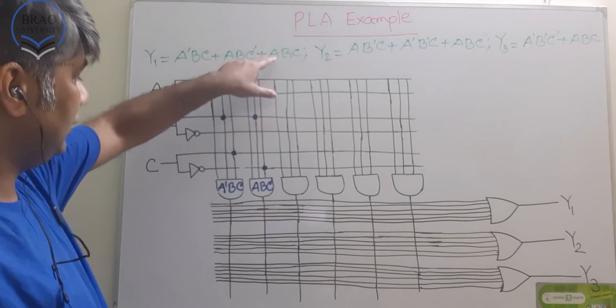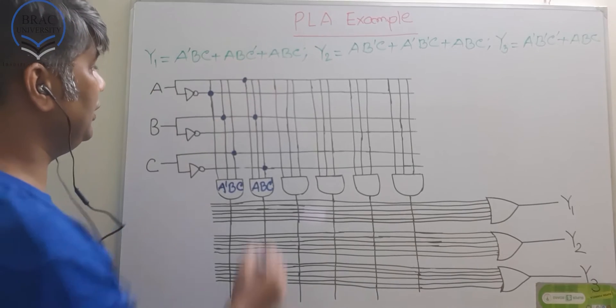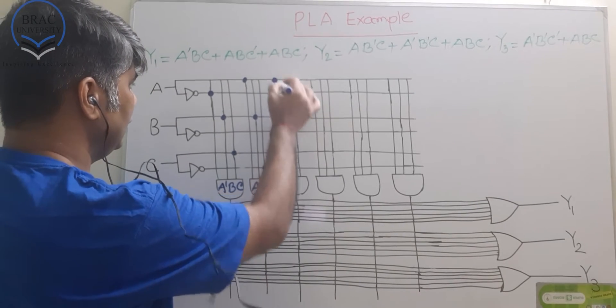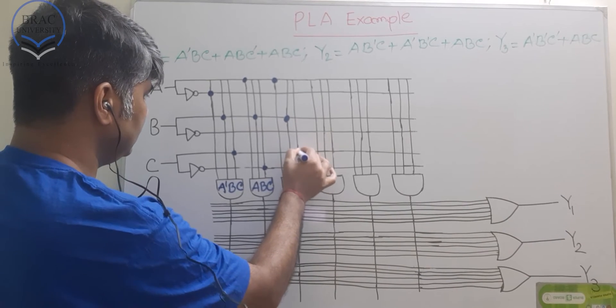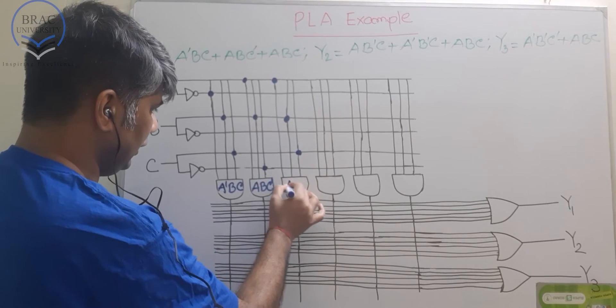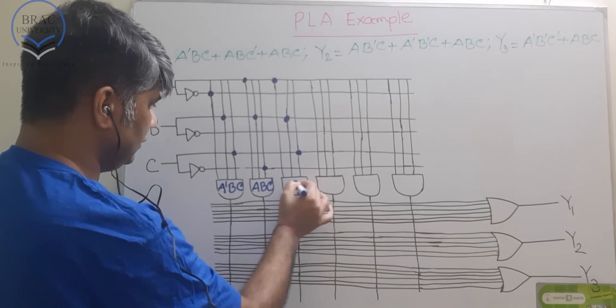Then this one, this one. This A, B, C. A, B and C. This is our A, B and C.